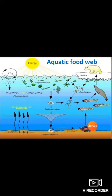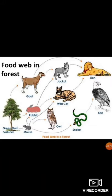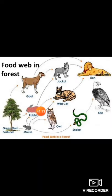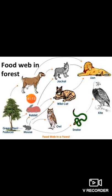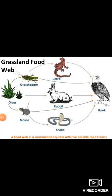This is how an aquatic food web looks — in any water body like ocean, river, pond, or pool this kind of web ecosystem can exist. This is how a food web in a forest looks: green plant taken by goat, goat eaten by jackal, jackal eaten by lion, or goat directly eaten by lion. Green plant taken by rabbit, rabbit eaten by jackal, jackal by lion, or rabbit by wild cat, wild cat by lion. Green plant by mouse, mouse taken by rabbit, wild cat, or owl — a complicated web structure.